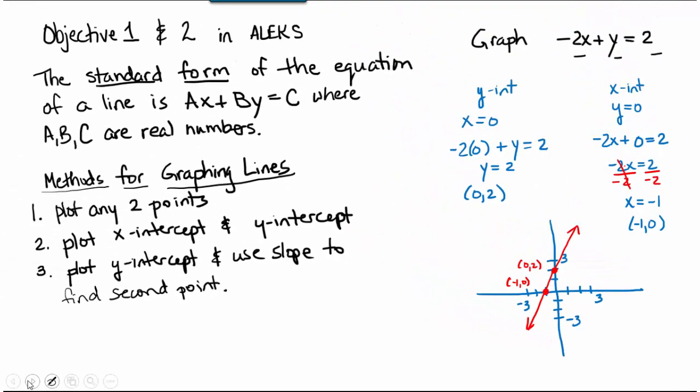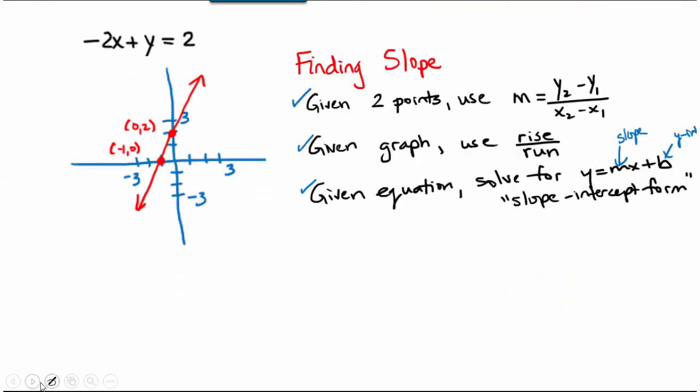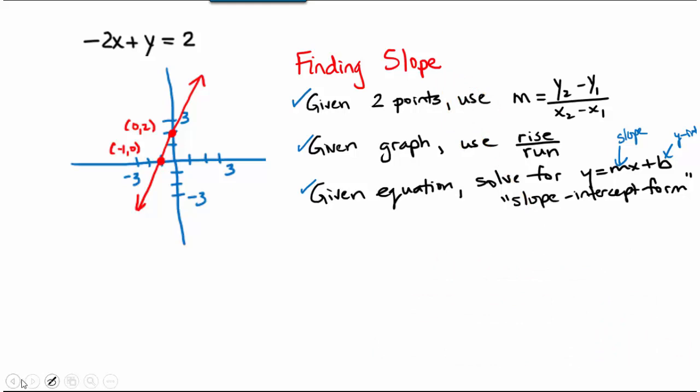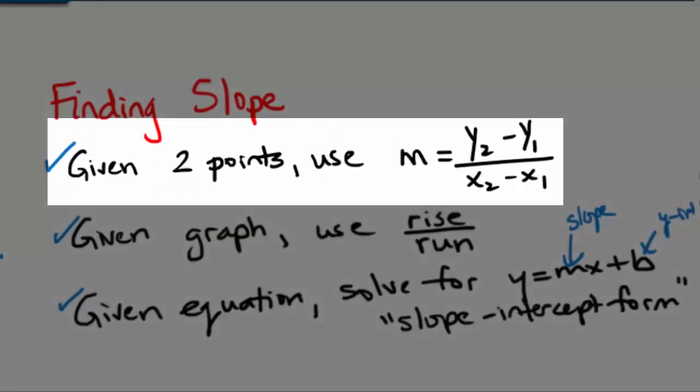Now we're going to talk about slope in great detail and how we can use slope to graph a line. The method we use to find the slope, which is a numerical expression for the direction of the line or the steepness of the line, depends on what information we're given. If we're given two points, we can use the formula m equals y2 minus y1 over x2 minus x1, where m represents the slope.